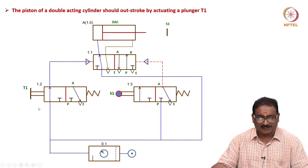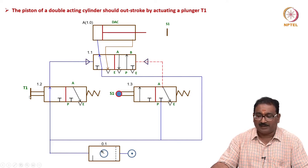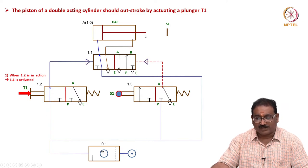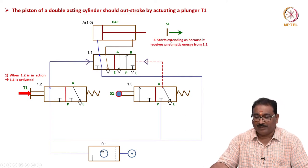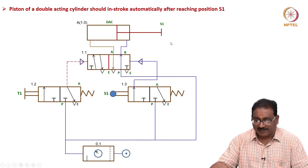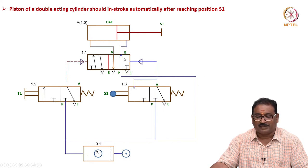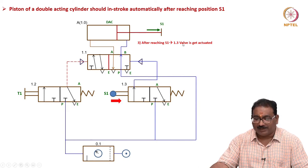Different positions are like this. The piston of the double-acting cylinder should outstroke by actuating plunger T1 - press it here, see the energy goes here, it actuates and extends. It starts extending. After reaching the front end, what happens? After reaching S1, the energy comes here, actuates this position. After reaching S1, valve 1.3 always gets actuated.